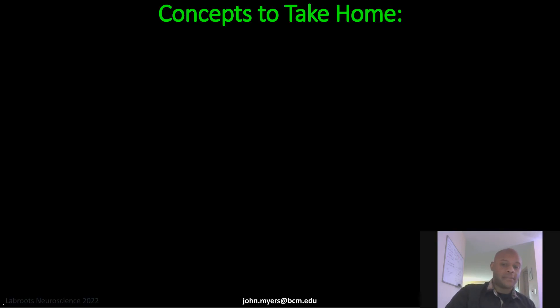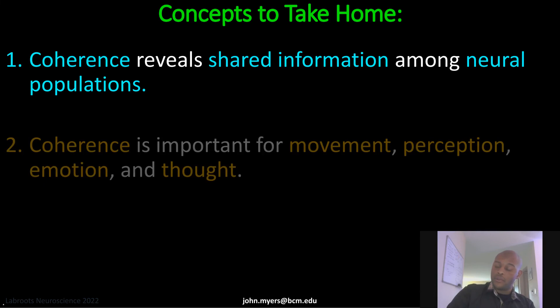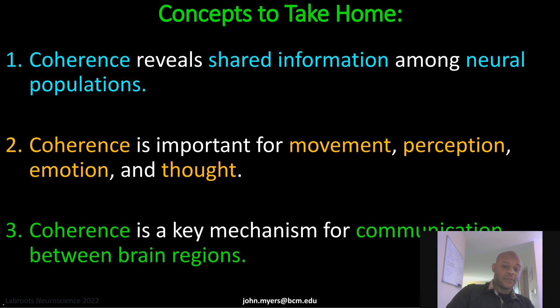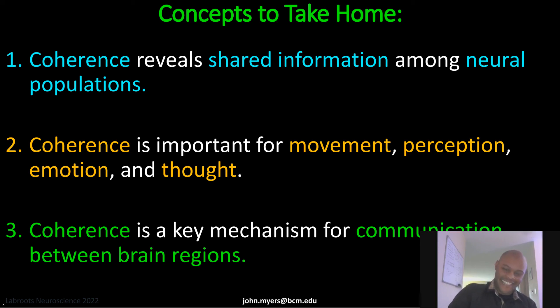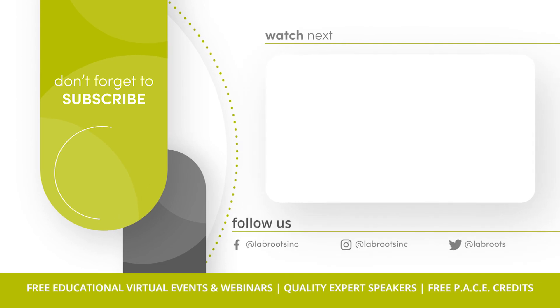The take-home concepts are: one, coherence reveals shared information among neural populations; two, coherence is important for movement, perception, emotion, and thought; three, coherence is a key mechanism for communication between brain regions. Coherence is the same thing as brainwave synchronization — you can call it coherence because it's way less of a mouthful. I would like to thank you all for your attention, and I would also like to thank LabRoots for having me on board. Here are the references for those who want to zoom in and make sure I said everything right. Have a good one, everyone. Thank you.